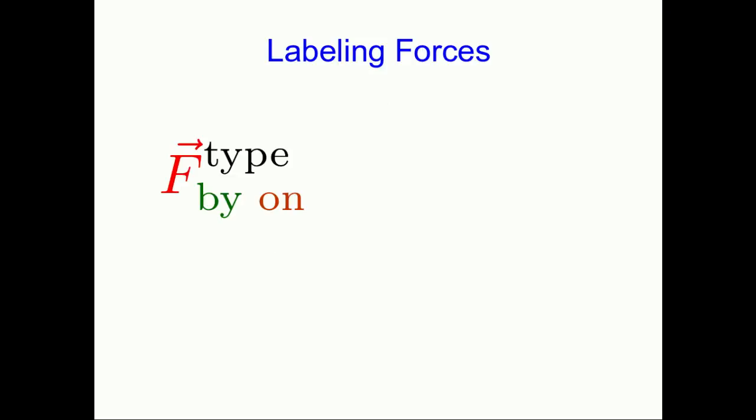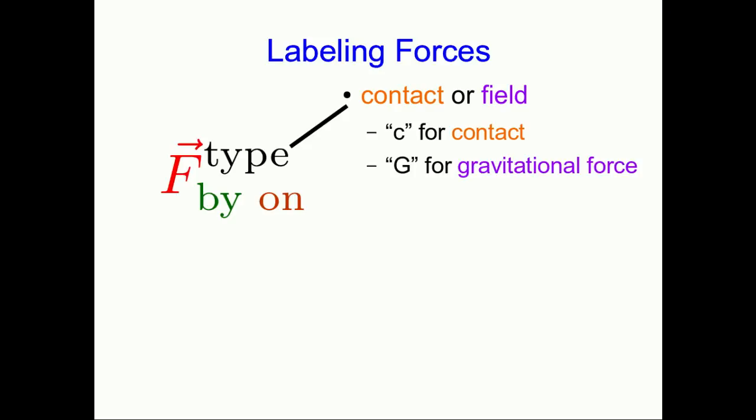Here's the system I'm going to use for labeling my forces. You don't have to follow my system, but I'd suggest this is a pretty good one. So I'll always indicate a force with an F to tell you that it's a force, and in the superscript, I'll indicate what type of force it is, either contact or field. If it's a contact force, I'll just put a C, and that's for all contact forces. However, for field forces, I will distinguish between them, so I'll use a G for a gravitational force, which is the main field force we'll deal with in this course, but in PHYS-1204, I'll often be using E for electrical force.